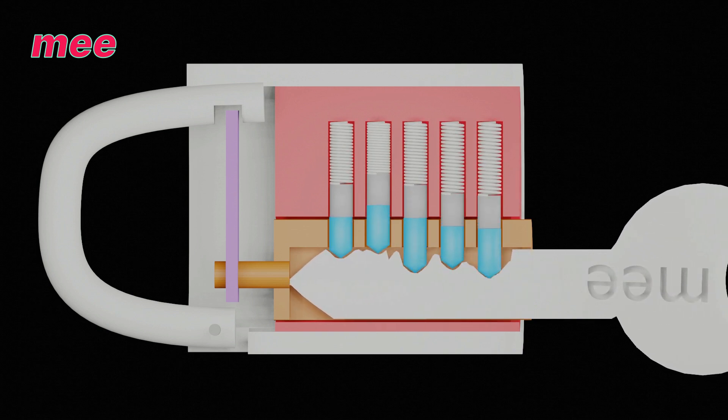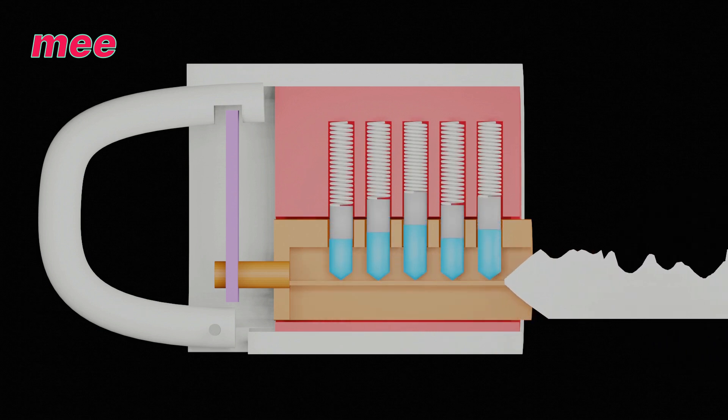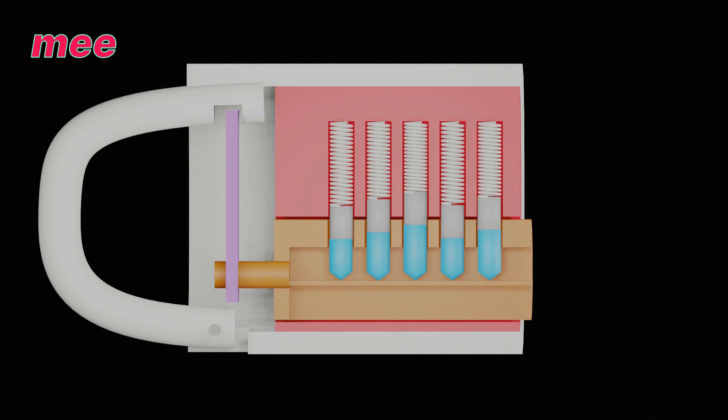On inserting it, it can't align the gap between pins along the shear line, so the pins restrict the plug to rotate. As a result, it's impossible to open it. So this is all about locks. My next video will be on master keys. Thank you.